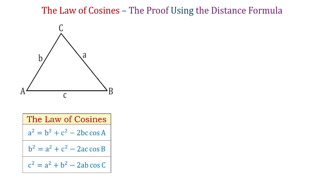Hello! The law of cosines is used in trigonometry to solve triangles. It's usually applied on oblique triangles, however, it can be used on any triangles. This law relates the sides of a triangle to its angles.